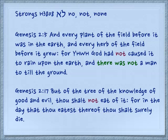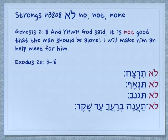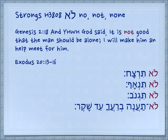Genesis 2.17: 'But of the tree of the knowledge of good and evil, thou shalt not eat of it. For in the day that thou eatest thereof, thou shalt surely die.' In Genesis 2.18: 'And Yehovah God said, it is not good — lo tov — that the man should be alone.' The concept of negating a command — do not do something — when the word lo is used, that is a continuing commandment.